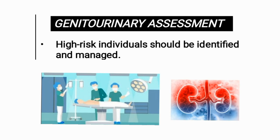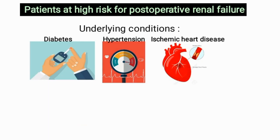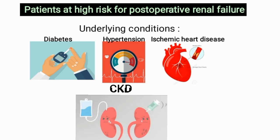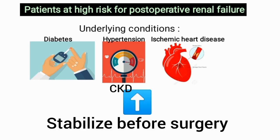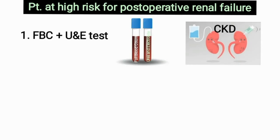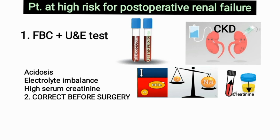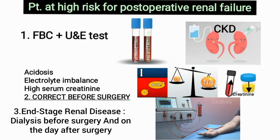Moving on to genitourinary assessment — patients at high risk for renal failure and kidney-related problems after surgery should be identified and managed pre-operatively. These include patients with underlying conditions like diabetes mellitus, hypertension, or ischemic heart disease, and patients with chronic kidney disease. In patients with CKD, a full blood count and urea and electrolyte test should be advised to detect acidosis, electrolyte imbalances, and high creatinine levels. Patients with chronic end-stage renal disease should undergo dialysis before surgery as well as the day after surgery.